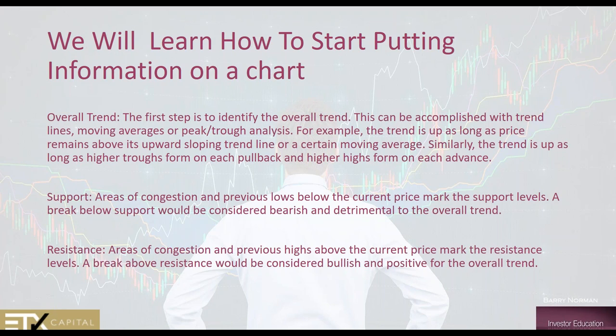The first step is to identify the overall trend. This can be accomplished with trend lines, moving averages, and peaks-and-trough analysis. The trend is up as long as the price remains above its upward-sloping trend line or certain moving averages, and as long as higher troughs form on pullbacks and higher highs form from each advance. Price doesn't move in one straight direction — it moves up and down. But there are rules, and too many people want to just put a line on a chart and say they have a trend line. The question is, how do you build a trend line that has legitimacy and is correct?